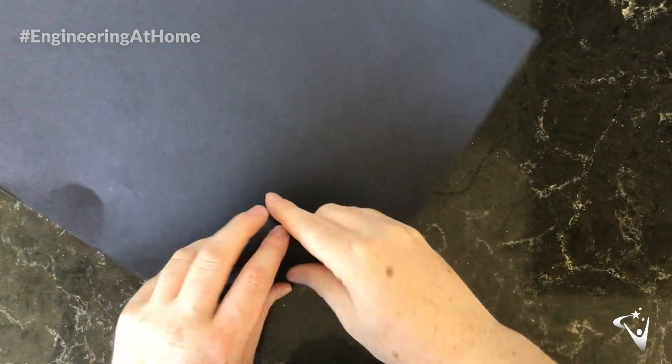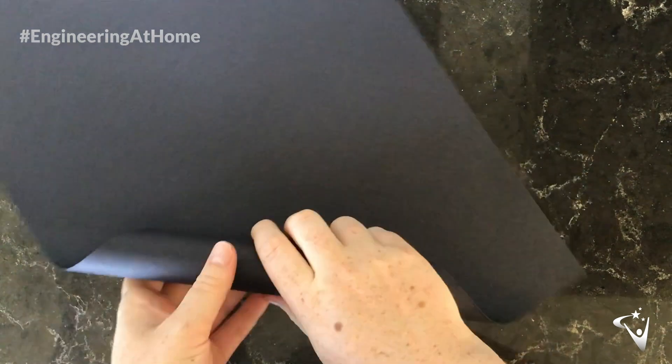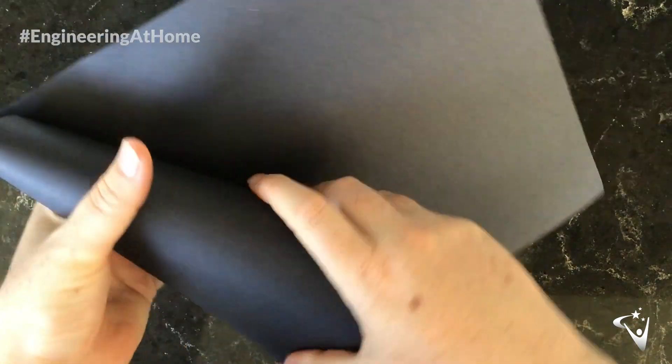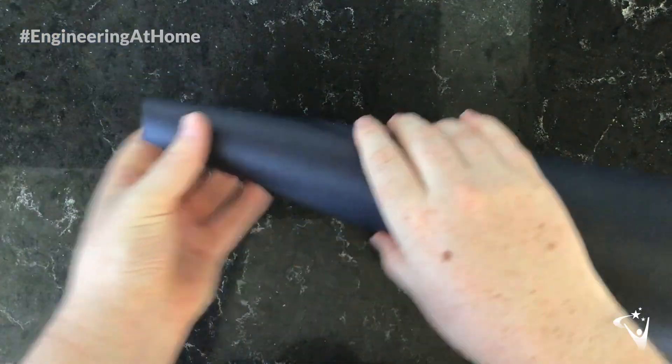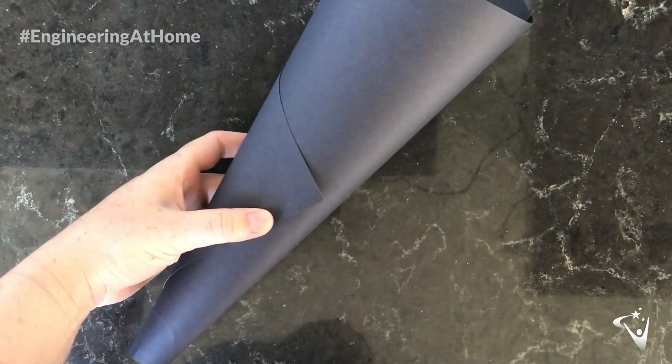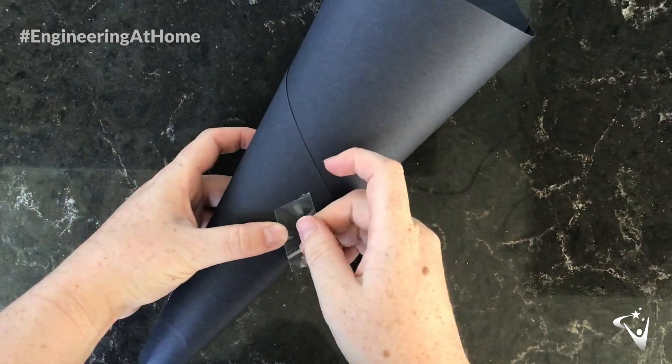The first step is to make the main tower. What you're going to do is take your piece of black card and roll it into a cone. You want it to have an opening at the top of about 5cm. You're then just going to tape it together so it stays like this.